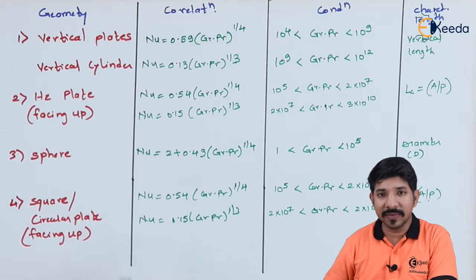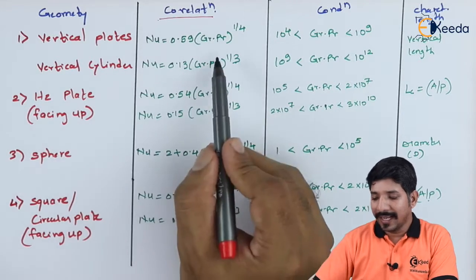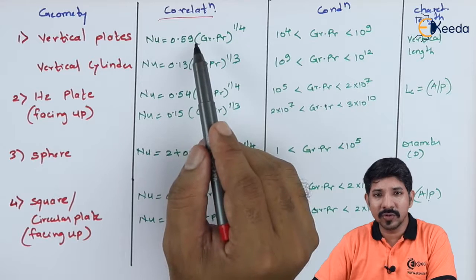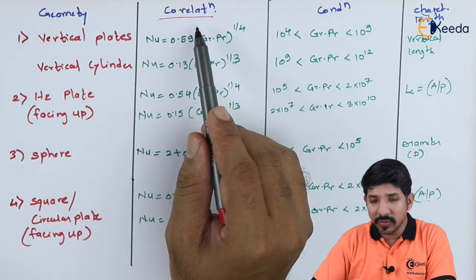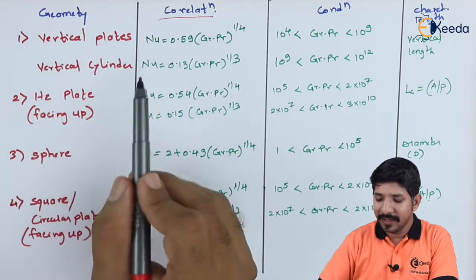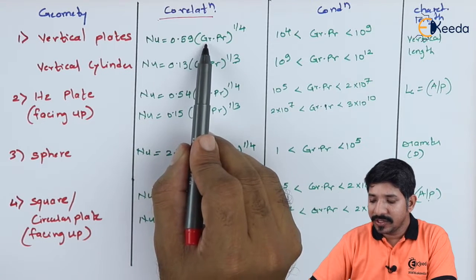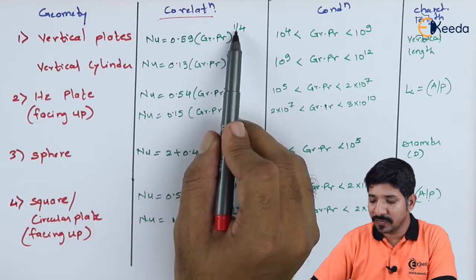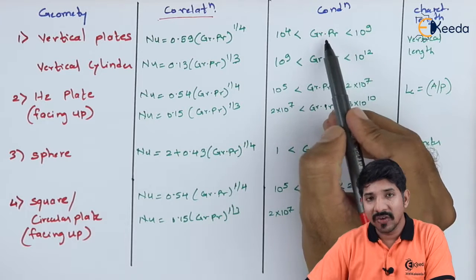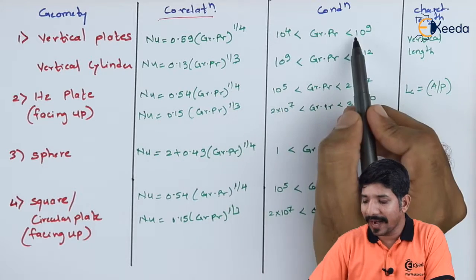I have listed a few important non-dimensional correlations. These correlations need to be understood, not memorized, because in most cases they will be given in the problem. But we need to know they are only valid for a given range. For the vertical plate and vertical cylinder, the Nusselt number is given as 0.59 times (Gr · Pr) raised to 1/4, and this is valid when the Rayleigh's number (product of Grashof and Prandtl number) is between 10^4 and 10^9.